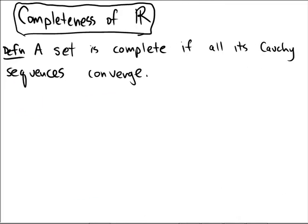Here's a short video to help you better understand the completeness of R. That's the property that distinguishes R from other metric spaces like Q for example. We will say that a set is complete if all its Cauchy sequences converge.